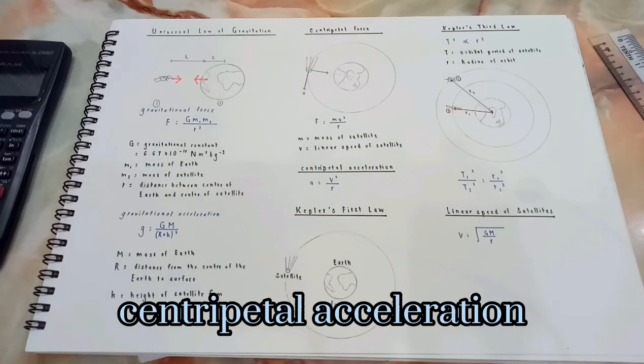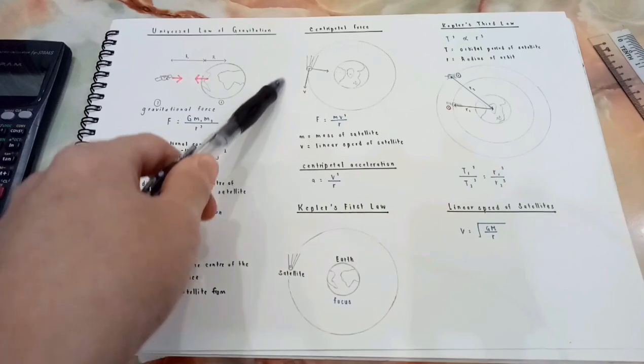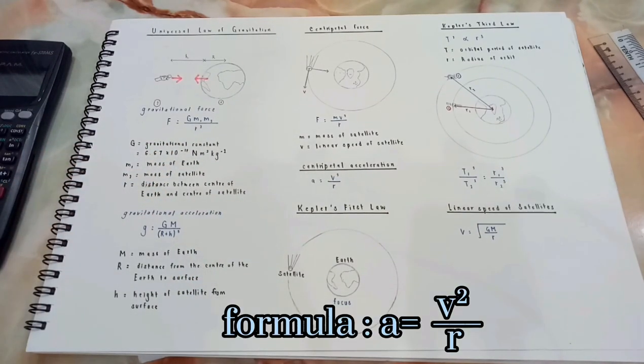As well as centripetal acceleration, that is when satellites achieve optimal linear speed by the formula A equals V² over R.